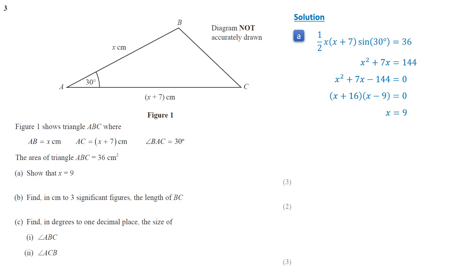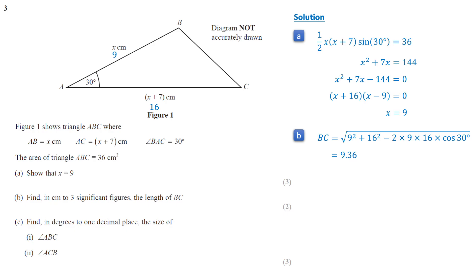The lengths of AB and AC are 9 and 16 respectively. To find the length of side BC, we use the cosine rule: BC equals square root of 9 squared plus 16 squared minus 2 times 9 times 16 times cosine 30. Simplifying gives BC equals 9.36. Next, for part c, we will find the smaller angle ACB.